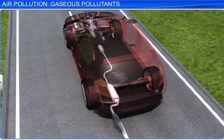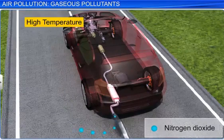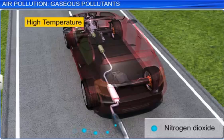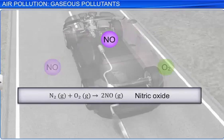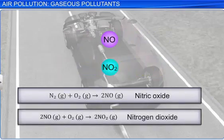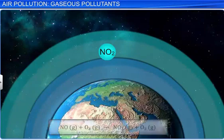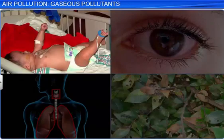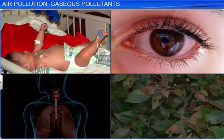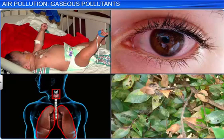The most common pollutant of nitrogen, nitrogen dioxide, is produced when fossil fuels are burned at high temperatures like in automobile engines. Dinitrogen and dioxygen are the main constituents of air, and they form nitric oxide and nitrogen dioxide at high temperatures. Nitric oxide also reacts with ozone in the Earth's atmosphere to form nitrogen dioxide. Nitrogen dioxide can cause respiratory diseases in children, irritate the eyes, lungs and throat, and damage the leaves of plants, affecting their photosynthesis.